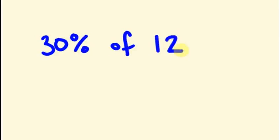Let us see another example. I am going to take 30% of 12. The zero is going to get removed and the decimal point is going to shift to the left. So 3 into 1.2 is 3.6.